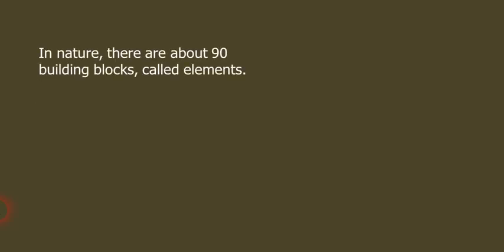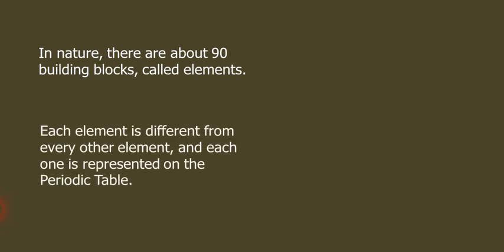Well, if we talk about atoms, we know that in nature, there are a total of about 90 building blocks that are called elements. These are the types of atoms that exist, almost basically like brands of atoms, if you want to think about them that way. And we know that every element is different from every other element.